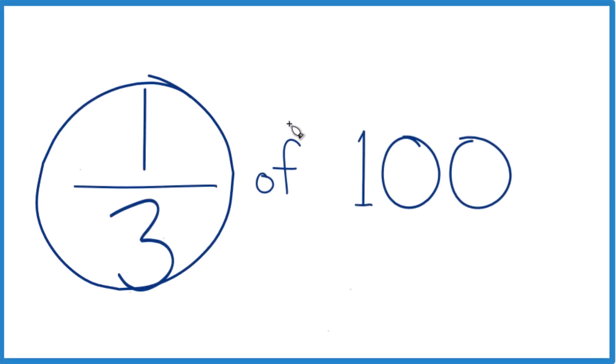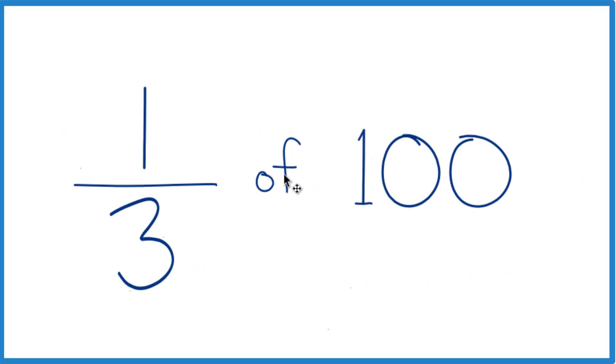So let's take one-third of 100, and here's how you do it. Instead of 'of,' let's change that to multiplication. It means the same thing, so we're taking one-third times 100 now.